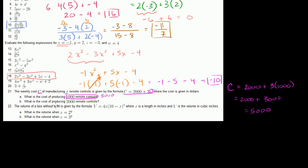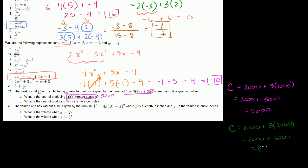Part B: what is the cost of producing 2,000 remote controls? Using the same formula: C equals 2,000 plus 3 times 2,000, which is 2,000 plus 6,000, equaling $8,000.